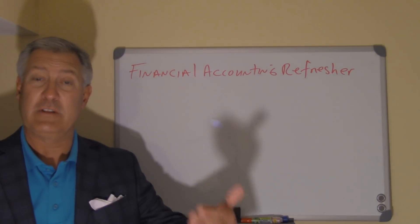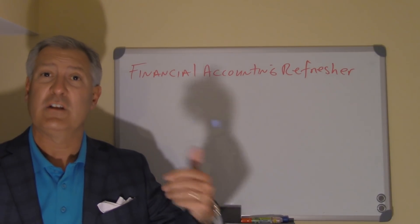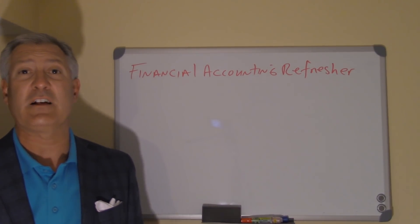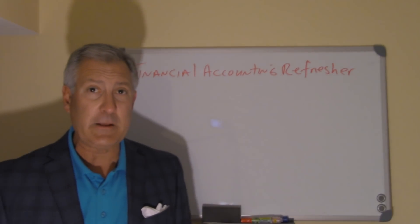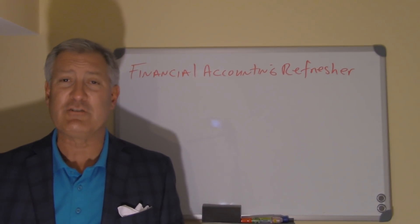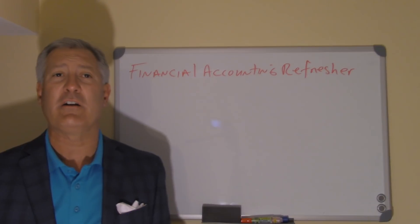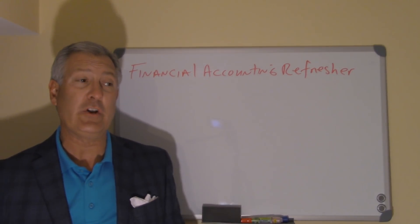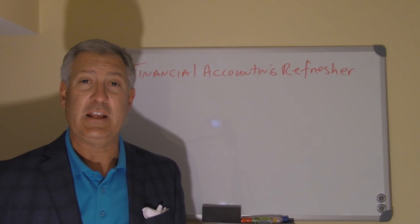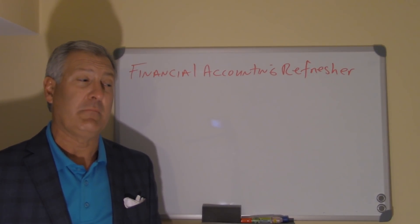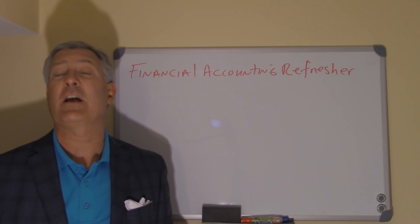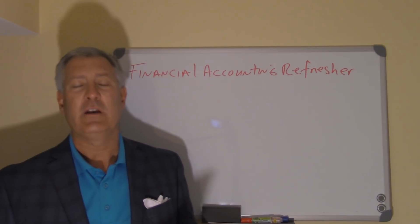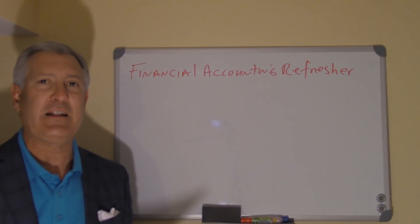So we need to remember debits and credits, T-accounts, and some transactions — specifically the sale of an asset. Secondly, we're going to be talking about job order costing as part of managerial accounting, and again we need to know debits and credits — specifically debits and credits that go through the manufacturing overhead account — and we're going to be looking at T-accounts.